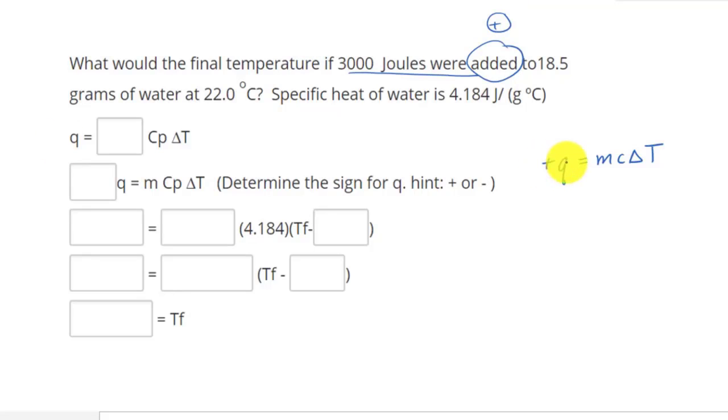So in this case, Q is missing right here. And determining the sign for Q, of course, is positive. Well, in this case, let's go back and plug in the values. Well, this is our Q and it is positive Q. So it's positive 3000 Joules equal to M times C delta T.